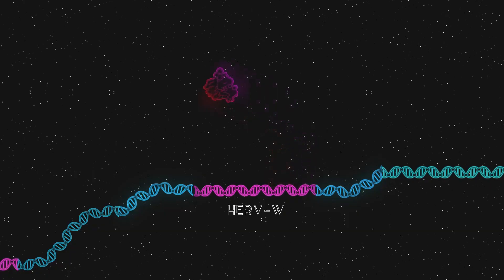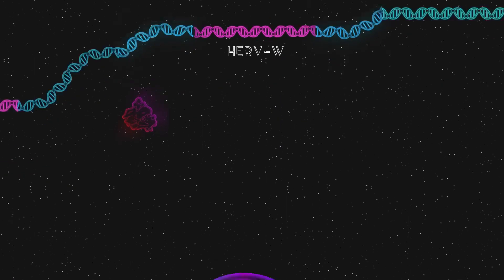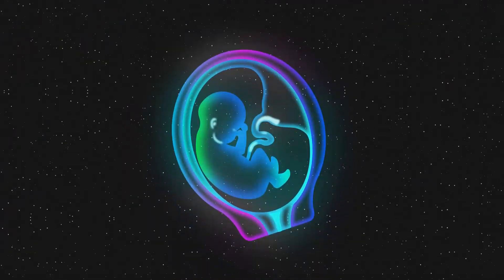For example, parts of Herb W code for syncytin, a protein crucial in the development of the placenta, an essential element in embryonic development. Without it, we may have still been laying eggs.